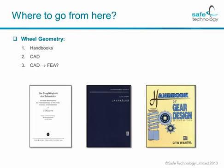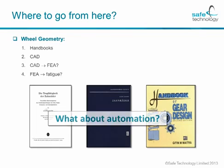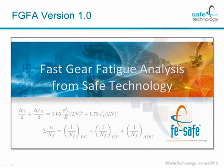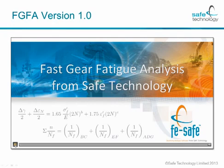But you then hit the next hurdle when you're trying to translate this all from CAD to FEA. And once you've translated it to FEA, then comes the final hurdle: how do you pass the information from the FEA on to the fatigue life prediction? This is where the thought of automation comes in. On the back of the idea of automation, I would now like to demonstrate to you fast gear fatigue analysis version 1 in live action.